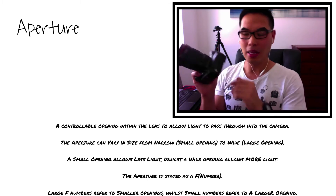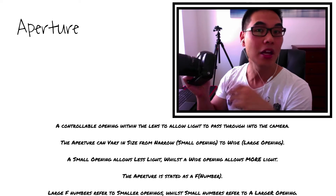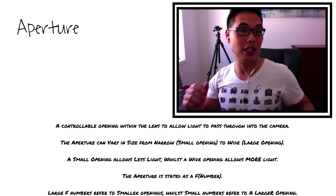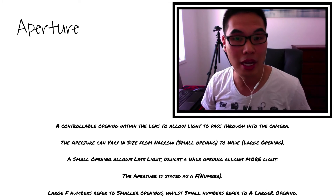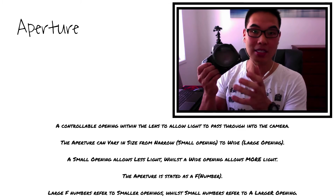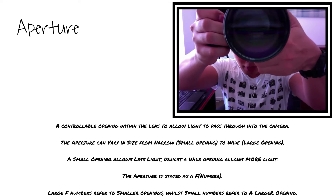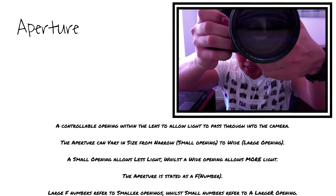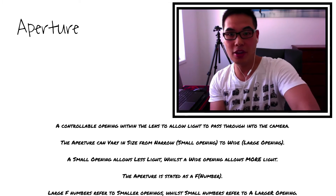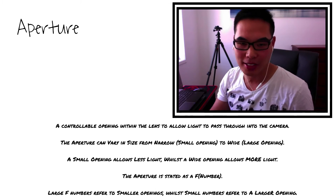Every camera has its own unique way of adjusting the aperture. You need to look through your instruction manual to find out how. We can adjust it to how big it is, and each lens has a limitation to how wide it can possibly go. So that's the aperture and how we as a photographer can adjust it.